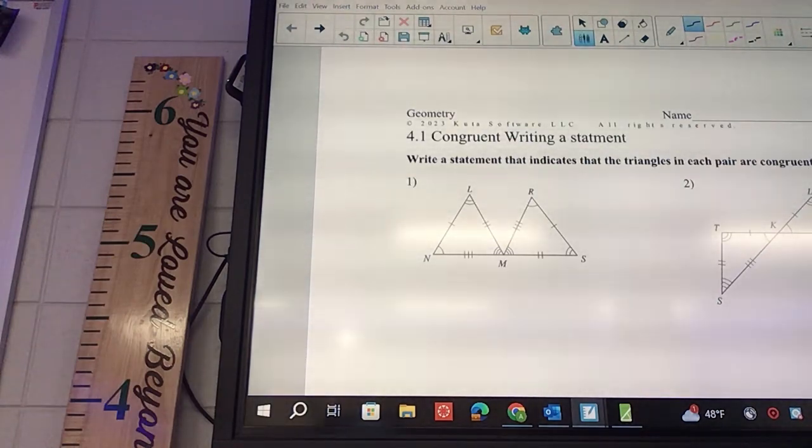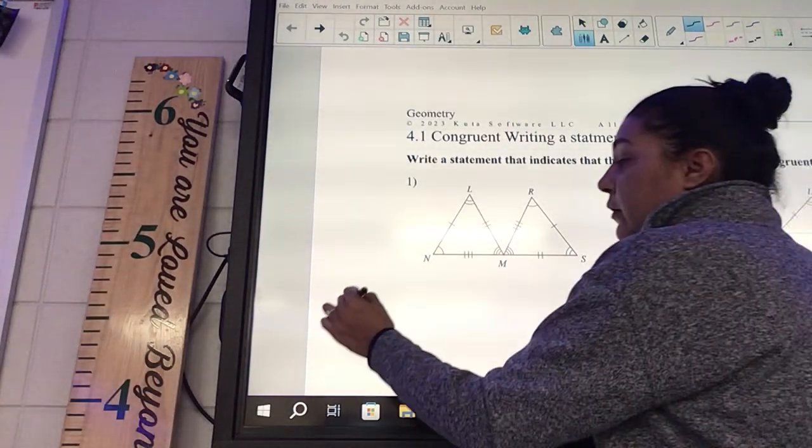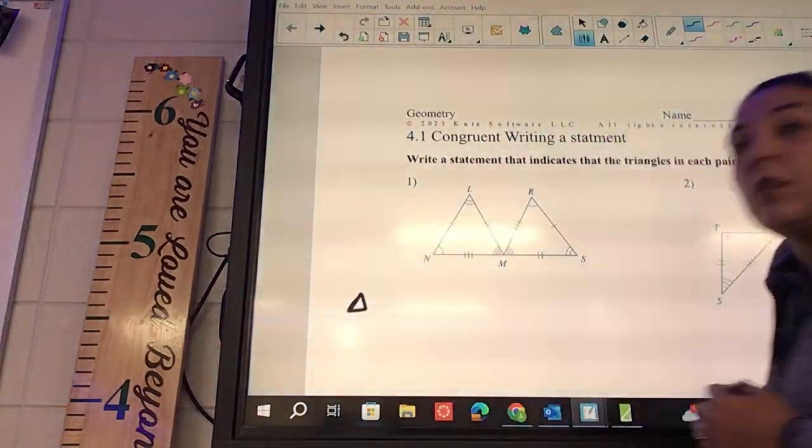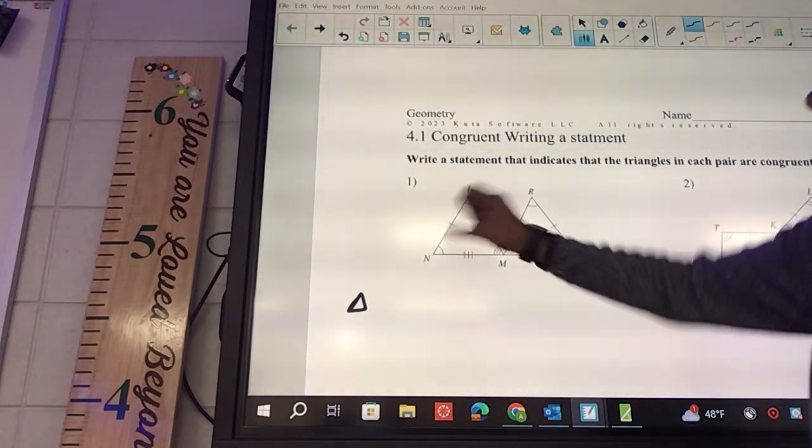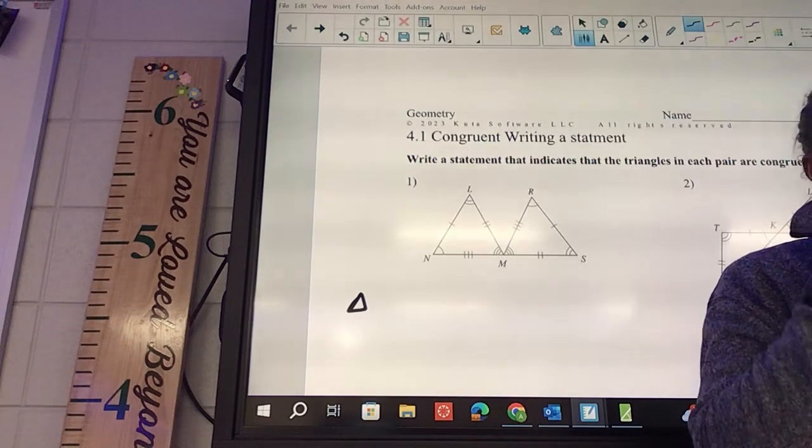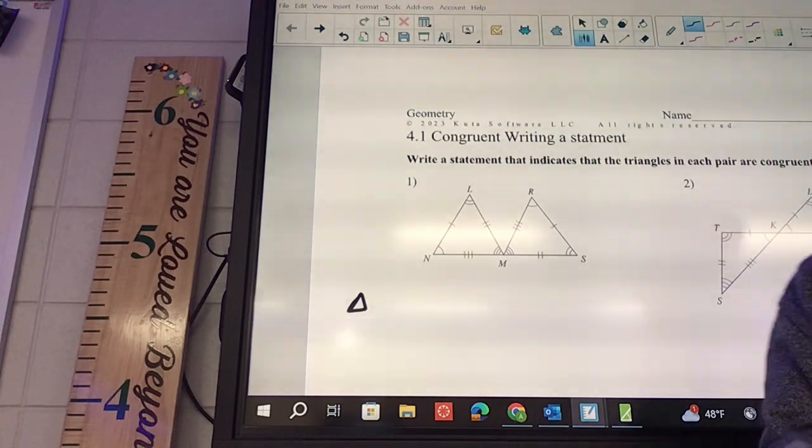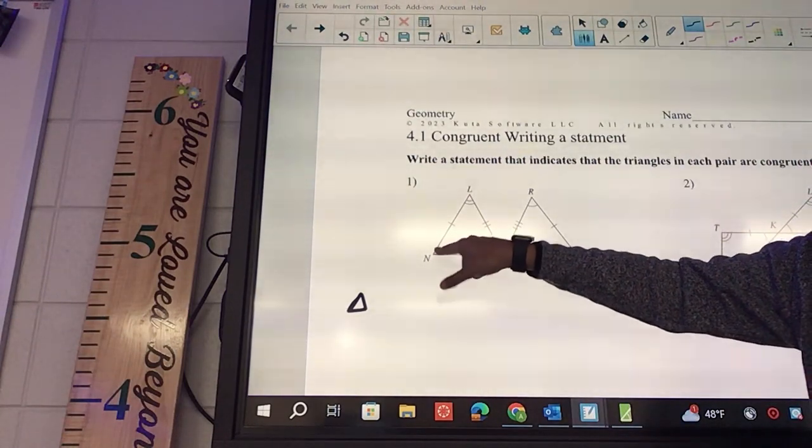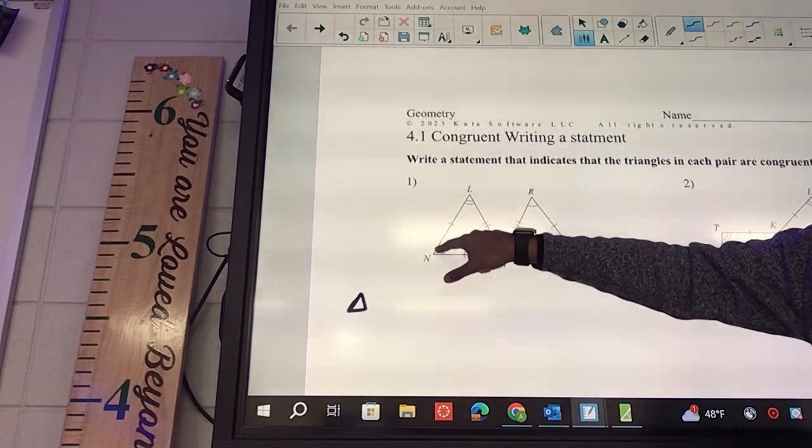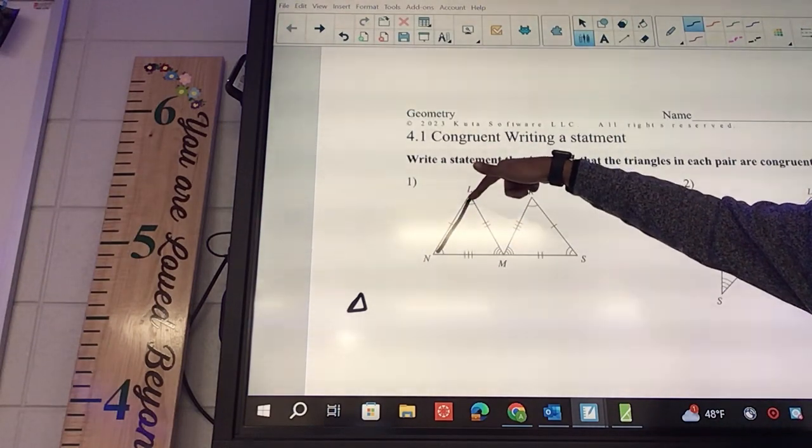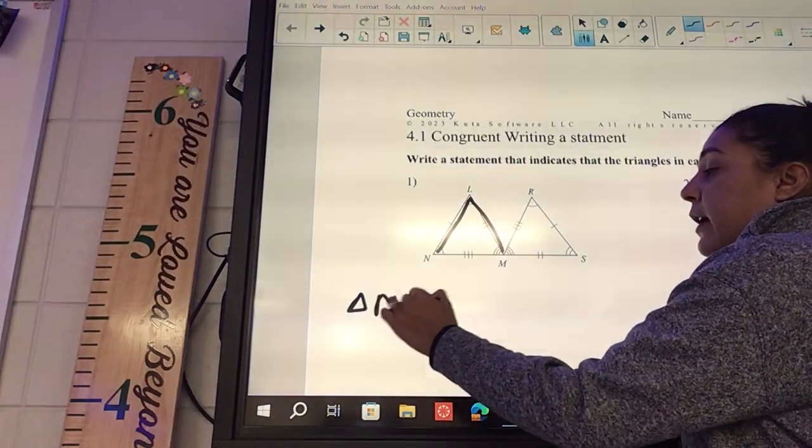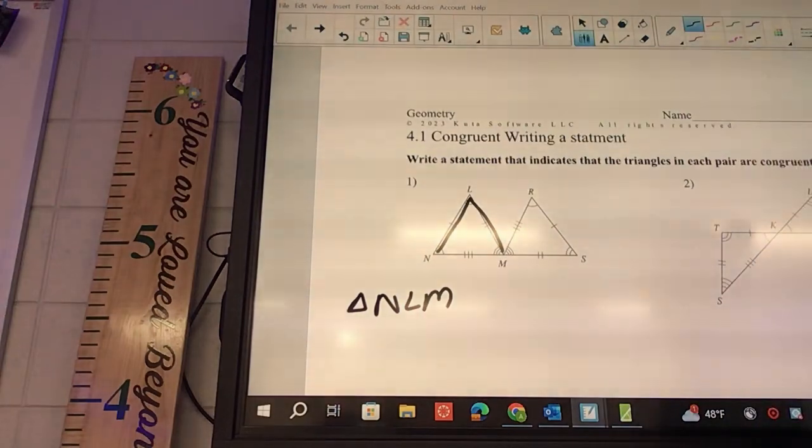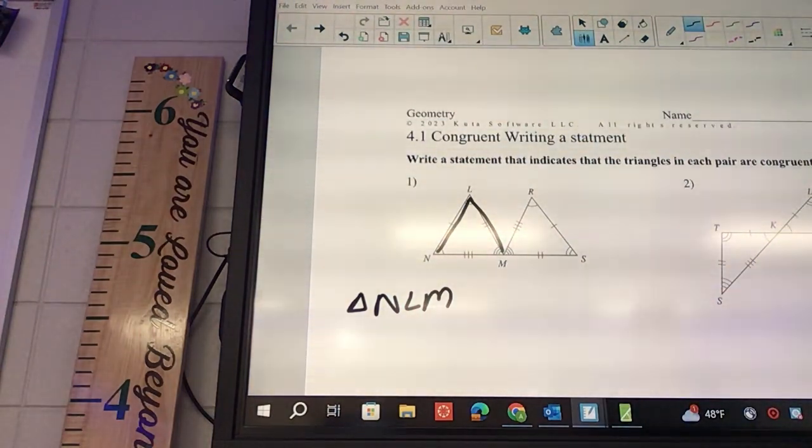The way that we write this - you're going to say triangle. Draw a little baby triangle. We're going to start with this first one. Now you have to go in a very specific order. We're going to go from angle one which is N to angle two which is L to angle three which is M. So it's going to be NLM - that's our first one, triangle NLM.